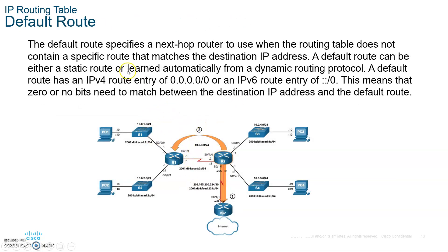The default route specifies the next hop router to use when the routing table does not contain a specific route matching the destination. For example, if a packet arrives and there's no matching route, the router will send it out to the ISP by default.